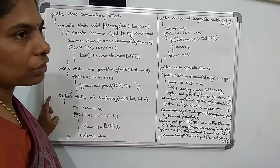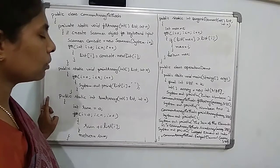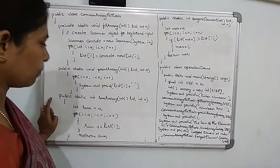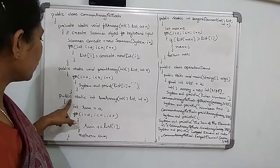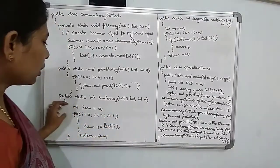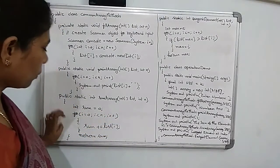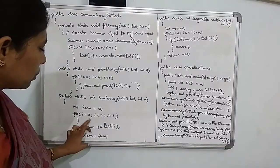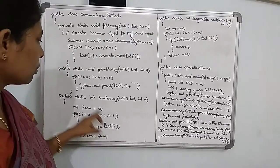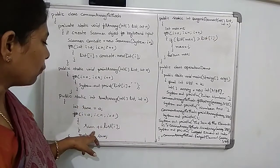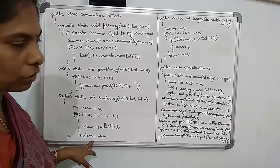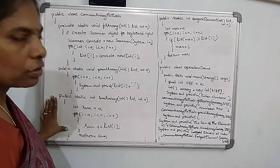The third method finds the sum of the array — the total of all elements. The method is static int sumArray(int[] list). Initially, sum = 0. Then, using a for loop — for(int i=0; i < n; i++) — sum = sum + list[i]. After the loop, we return the sum value. This is the sum of the array method.